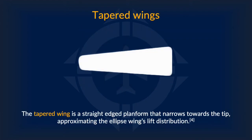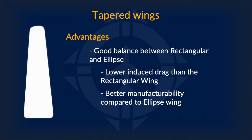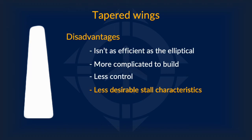Next, we have the tapered wing. It is a straight-edged planform that narrows towards the tip, hence its name. Tapered wings are a great middle ground between elliptical wings and rectangular wings. They have lower induced drag compared to rectangular wings, while having better manufacturability compared to elliptical wings. However, this also means it is a jack-of-all-trades, master of none. It isn't as efficient as the elliptical wing, nor as easy to build as the rectangular wing. In addition, it also has less control compared to the rectangular wing.